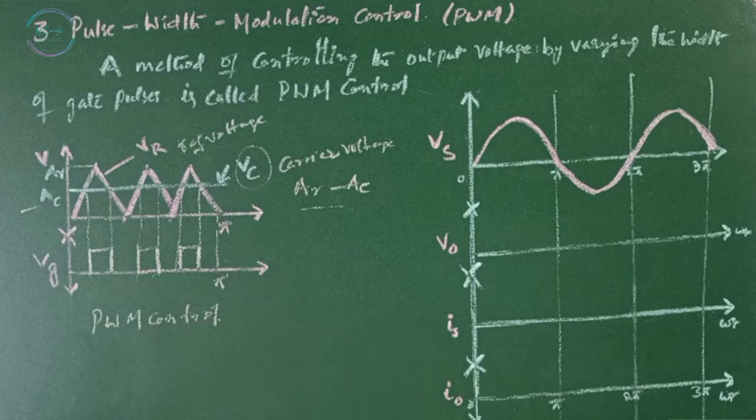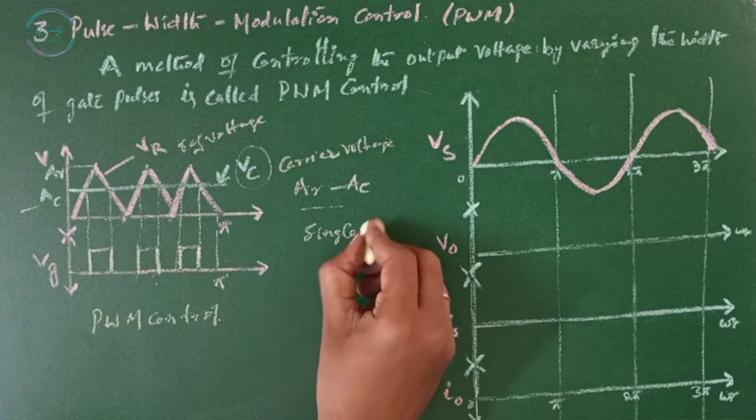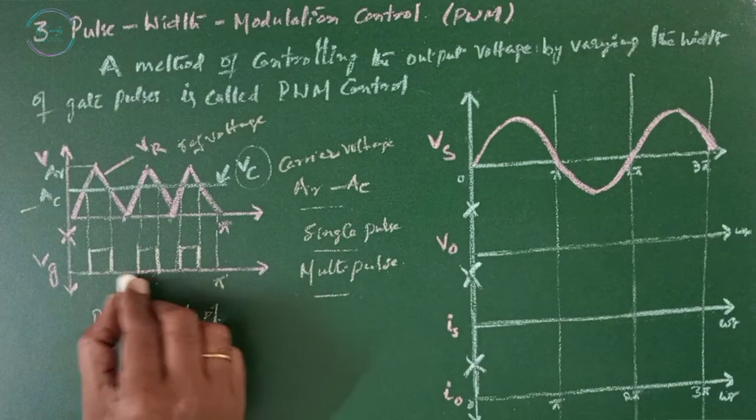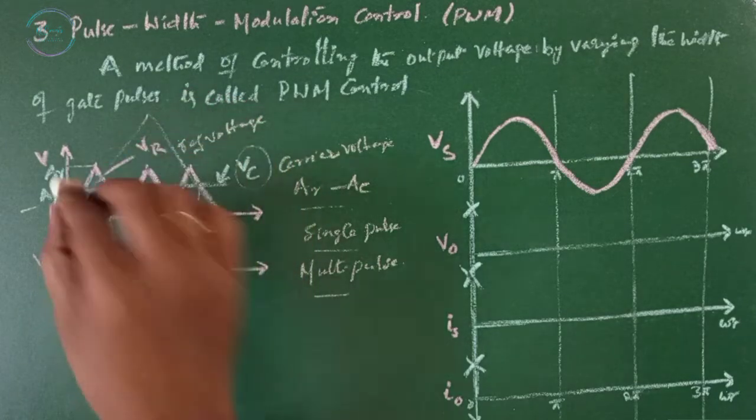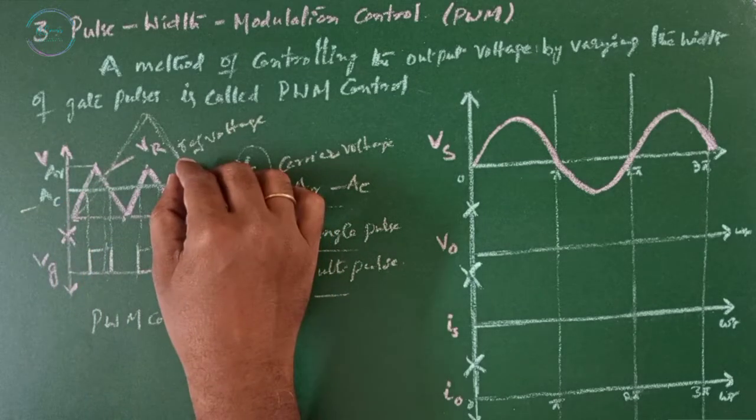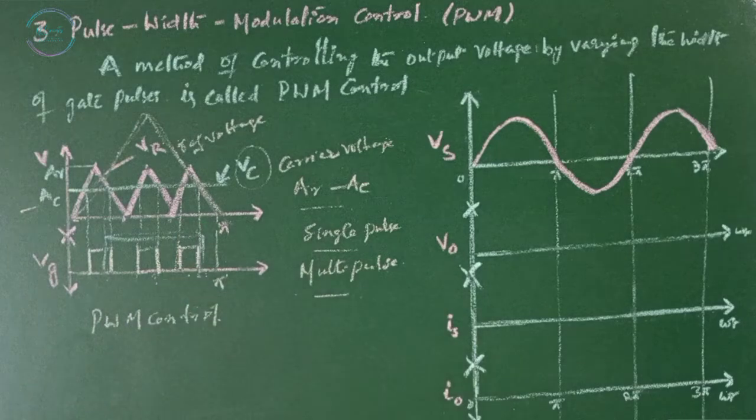This is again two type, whether this signal is single pulse or multi pulse. Here in this half cycle we have considered three pulses. You can consider a single pulse considering a single reference, where you will get a single pulse from here to here, you will get one single pulse.